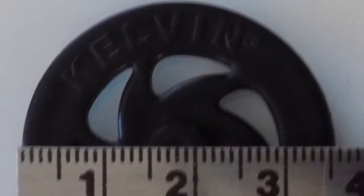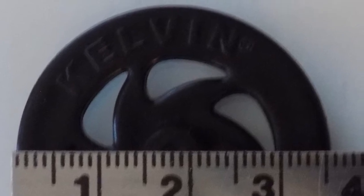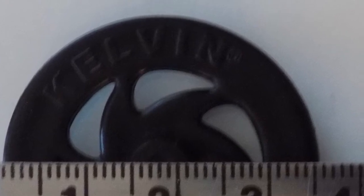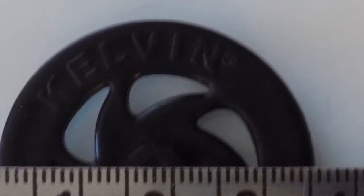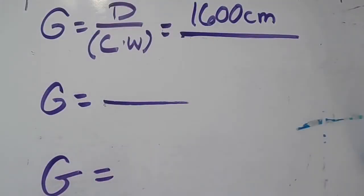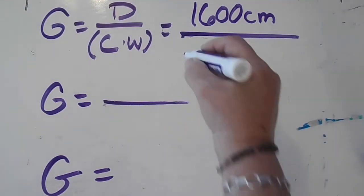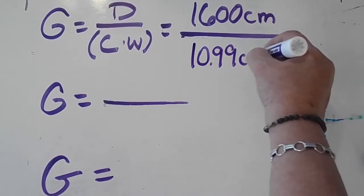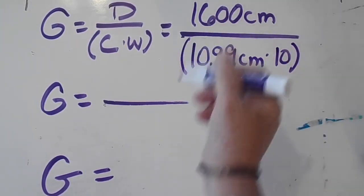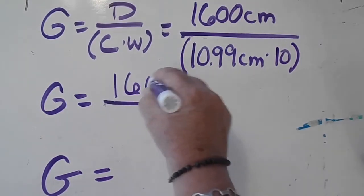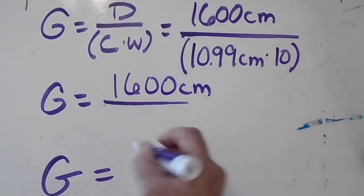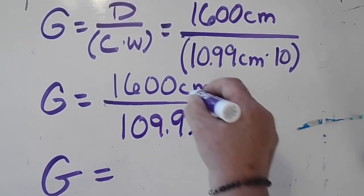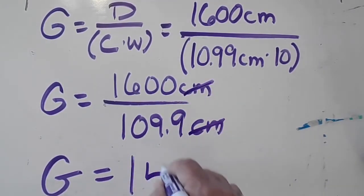Suppose you want to use this spoke Toby wheel as the drive wheel. This wheel has an approximate diameter of 3.5 centimeters and an approximate circumference of 10.99 centimeters. To get the gear multiplier: G = 1600 cm ÷ (10.99 cm × 10) = 1600 ÷ 109.9 cm, which yields a gear multiplier of approximately 14.6, considerably higher than the previous examples due to its smaller circumference.